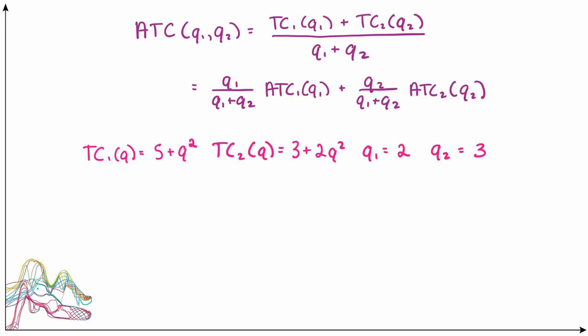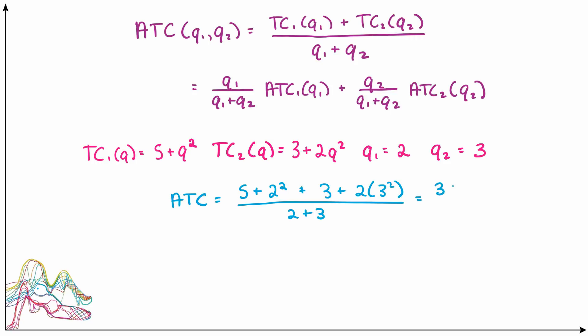Let's do another example. The total cost of producing Q units of the first output is TC1 = 5 + Q², and the total cost of producing Q units of the second output is TC2 = 3 + 2Q². With Q1 = 2 and Q2 = 3, average total cost equals (5 + 2² + 3 + 2×3²) / (2 + 3), which adds up to 30 over 5, giving an average total cost of 6.